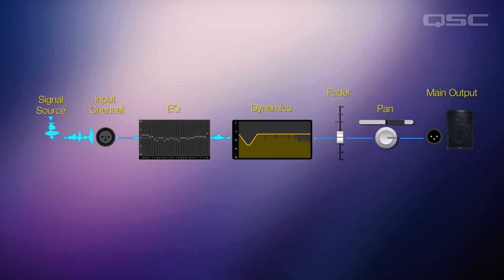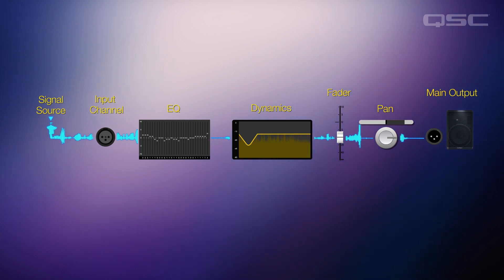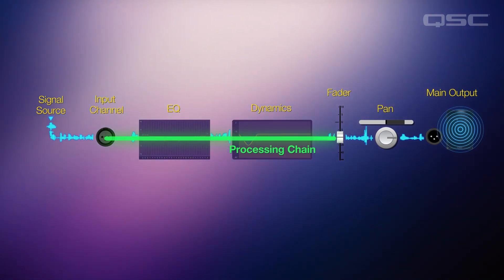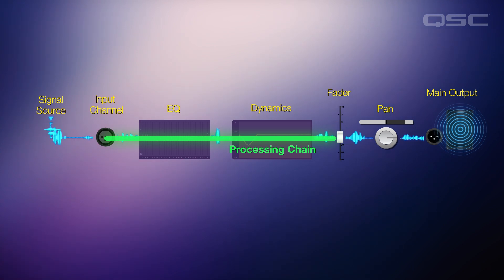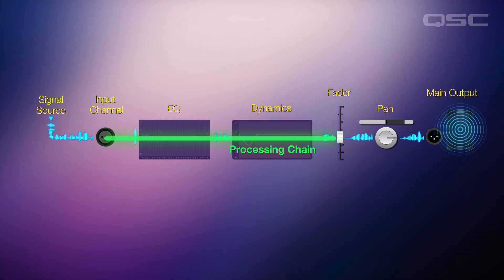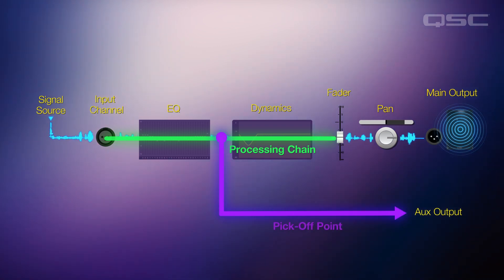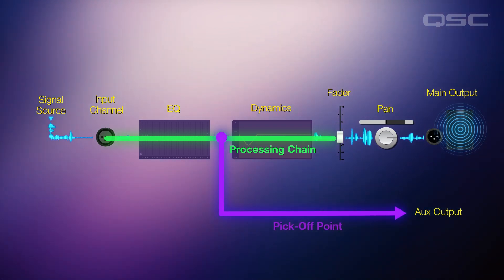As a signal enters the TouchMix via its input, it passes through the channel's processing chain — the delay, equalizer, and dynamics — before going to the channel fader, pan control, and finally to the main output. An aux lets us take signal from a point in the processing chain, we call that the pickoff point, and use it to create another mix that is sent to a separate aux output.